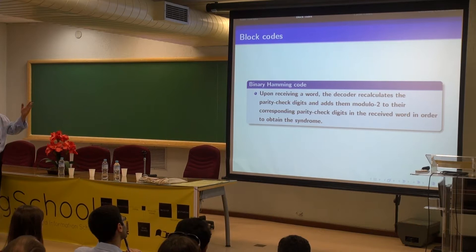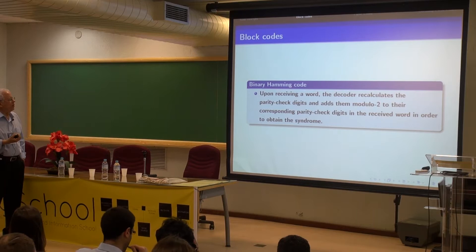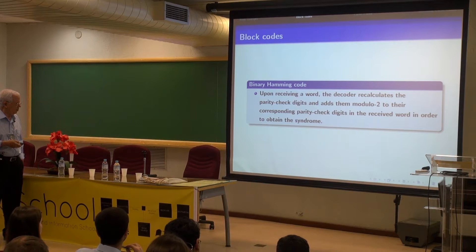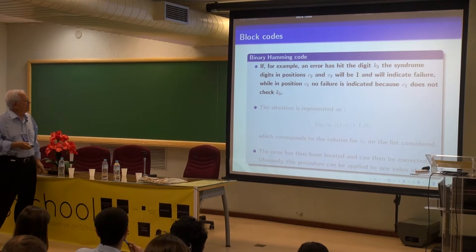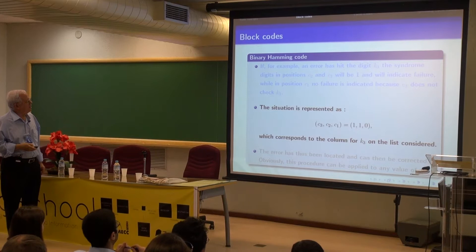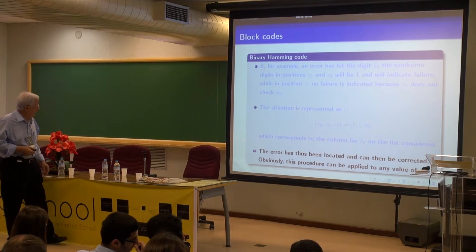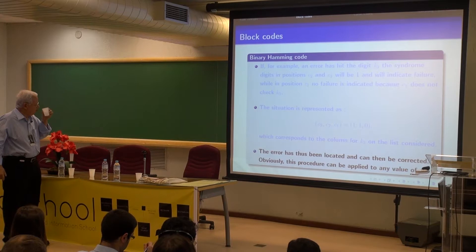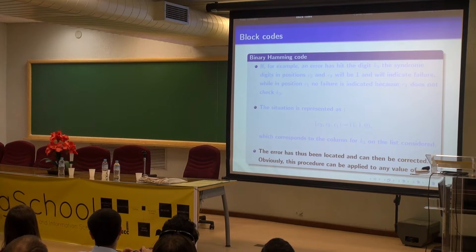You compute the syndrome by doing modulo-2 addition of the recalculated parity checks with those that were received. This also works for errors in the parity checks themselves because you have the same rule. That gave the false idea that you could easily extend that to correct double errors, but it took roughly 10 years for a code to correct double errors to appear — essentially a generalization of Hamming codes, which are the BCH codes we will talk about later.